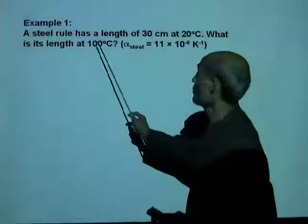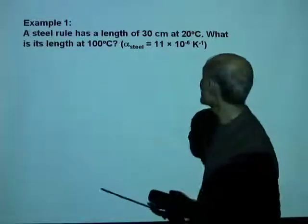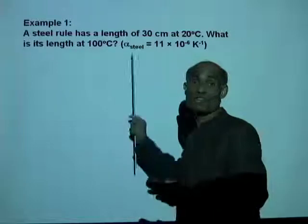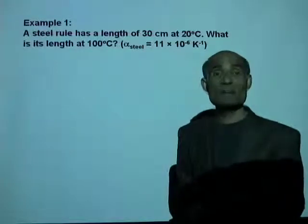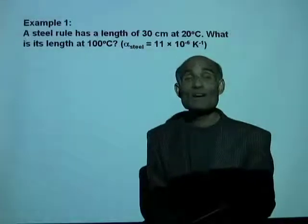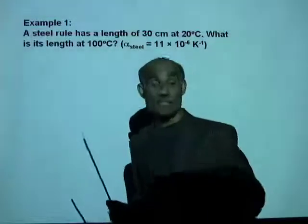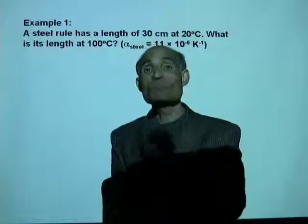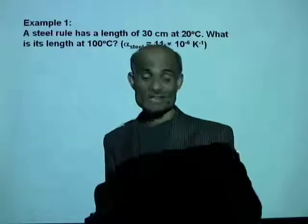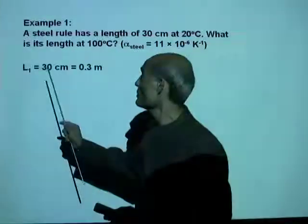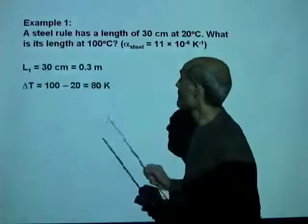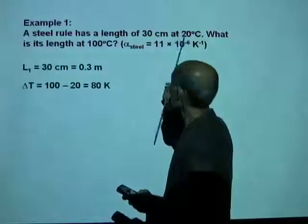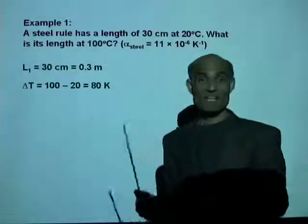A steel rule has a length of 30 cm at 20°C. What is its length at 100°C? Alpha for steel is 11 times 10⁻⁶ per Kelvin. What we need to do is use the equation we developed: L₂ equal to L₁ times 1 plus alpha delta T. Delta T is T₂ minus T₁. We've got our initial length 0.3 meter. We've got a change in temperature.